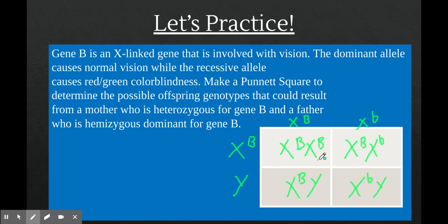Basically, if they have a daughter, she will have normal vision — she'll either be homozygous dominant or heterozygous. If they have a son, there's a 50-50 chance that son might have colorblindness, since he could be either hemizygous dominant or hemizygous recessive. You can see from this example how much more likely it is for a male to inherit colorblindness than for a female.